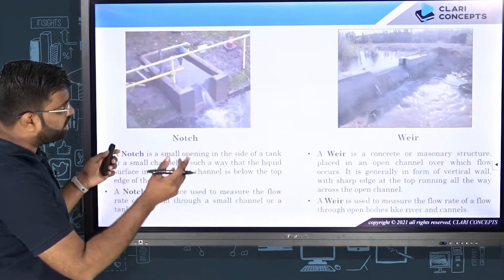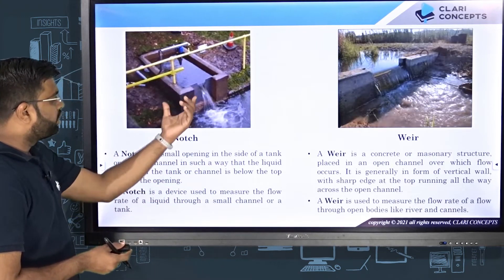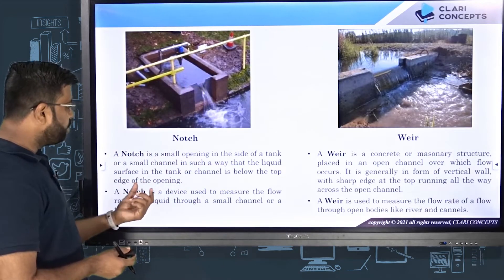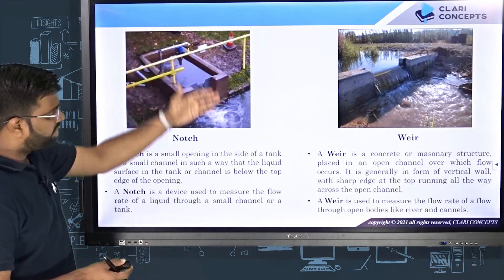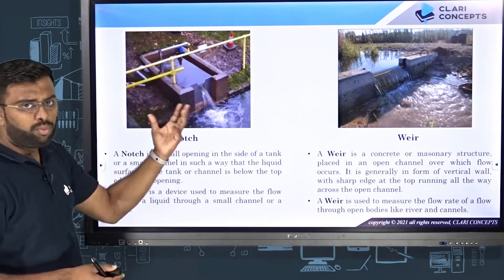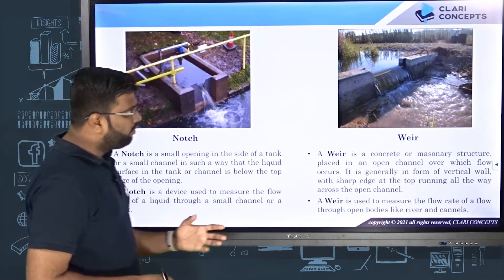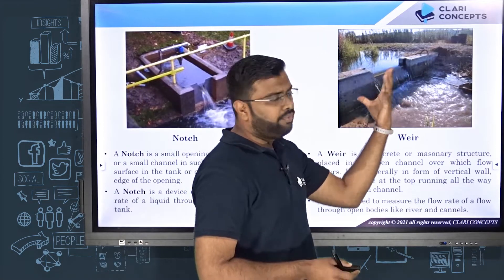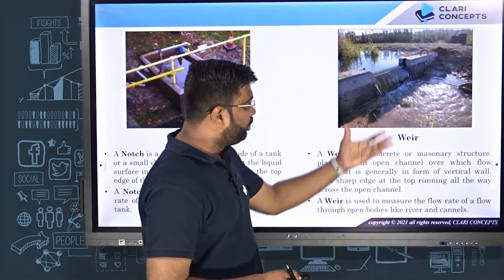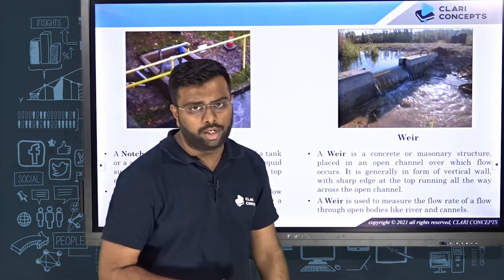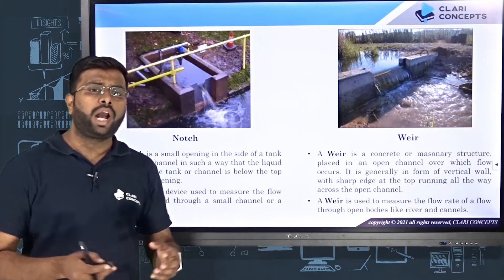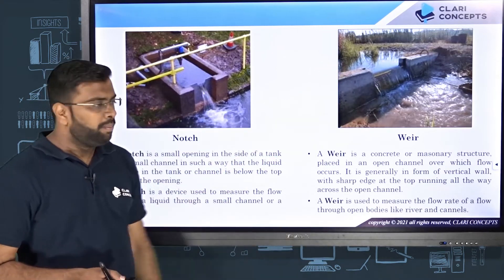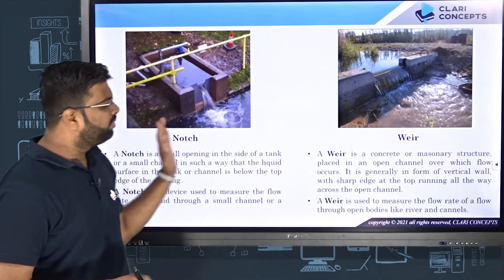We have also seen what is basically a notch and a weir. The notch is something of relatively smaller size, used on the side of a tank to measure the flow rate for small bodies. Weirs are of relatively larger size, made up of a very concrete structure, and are used to measure the flow rate of water flowing through canals and rivers — the big water bodies. The fundamental principle of both remains the same.